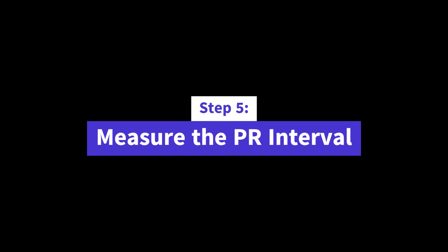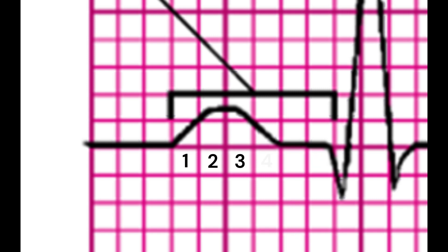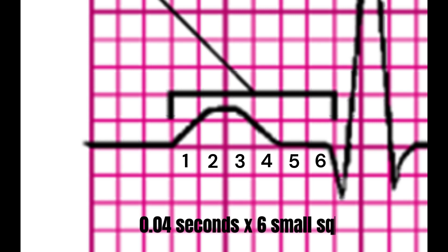Step 5: Measure the PR interval. To measure the PR interval, count the number of small squares between the beginning of the PR interval and the beginning of the QRS complex. You can use an EKG caliper to accurately count the squares.